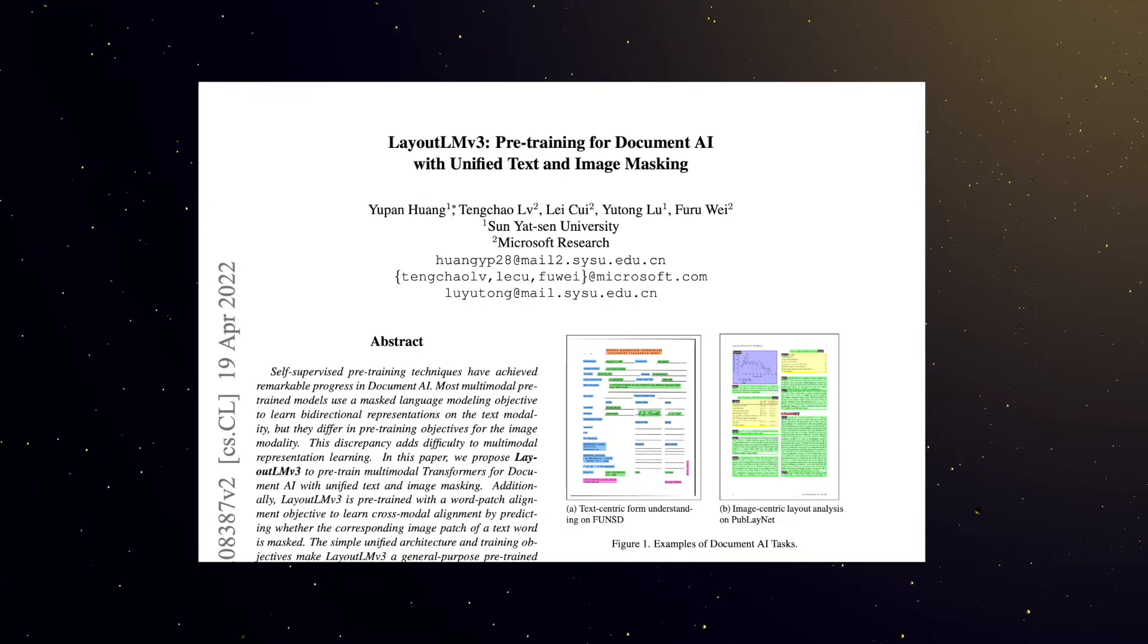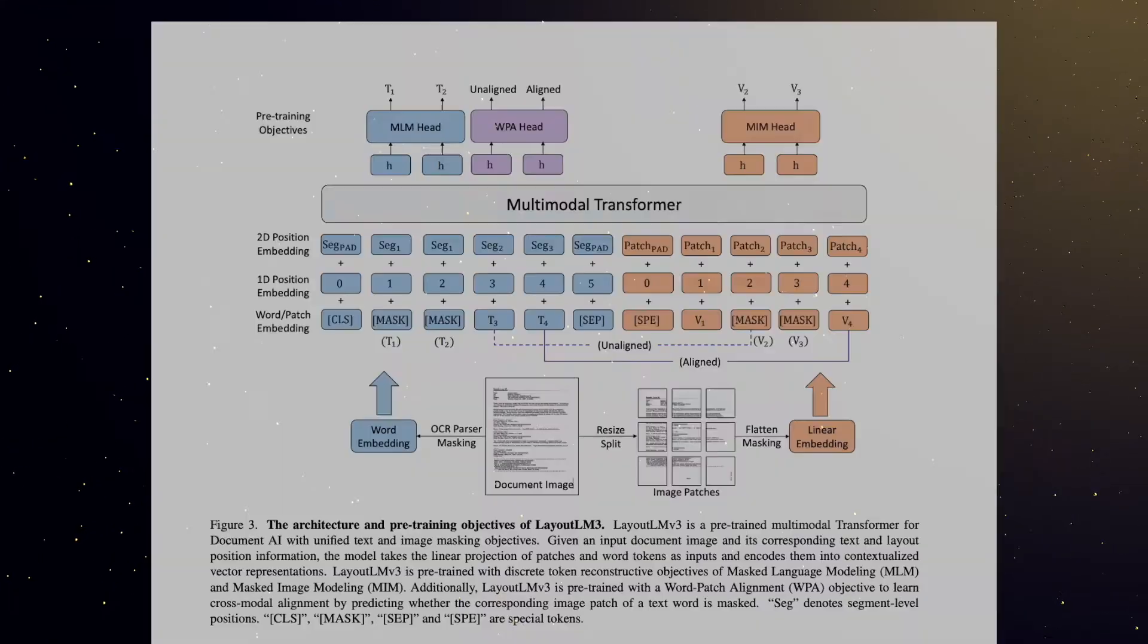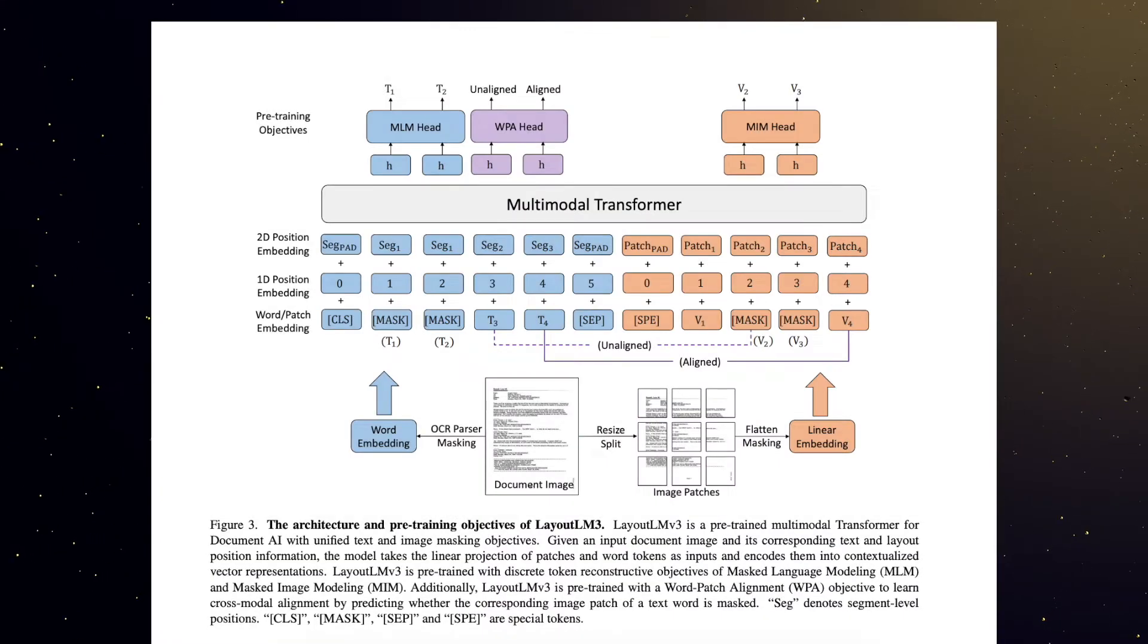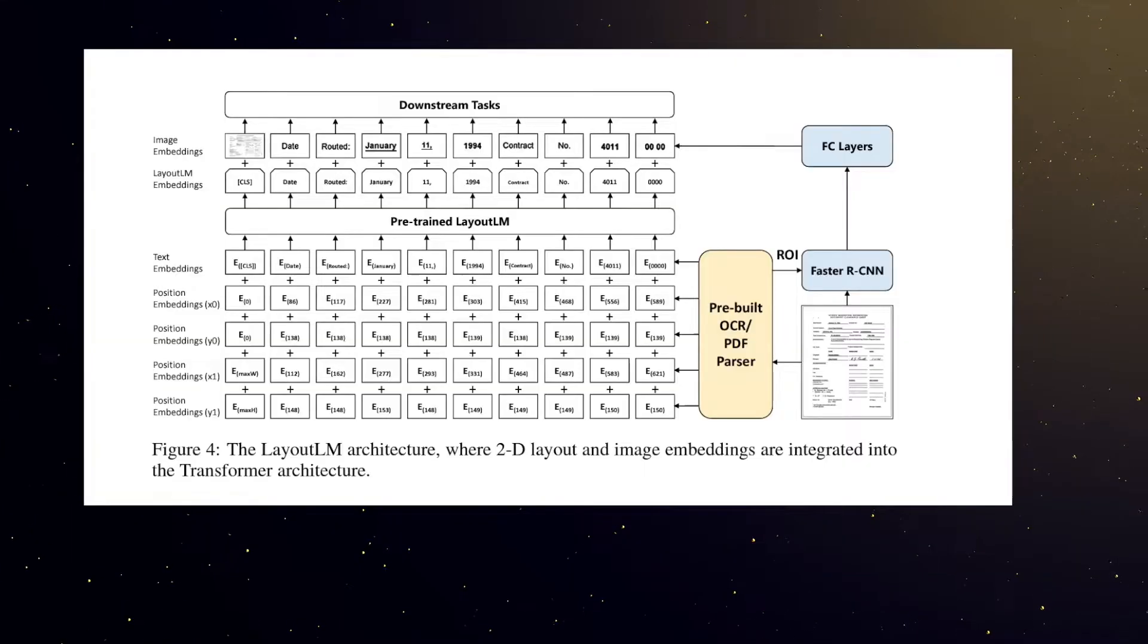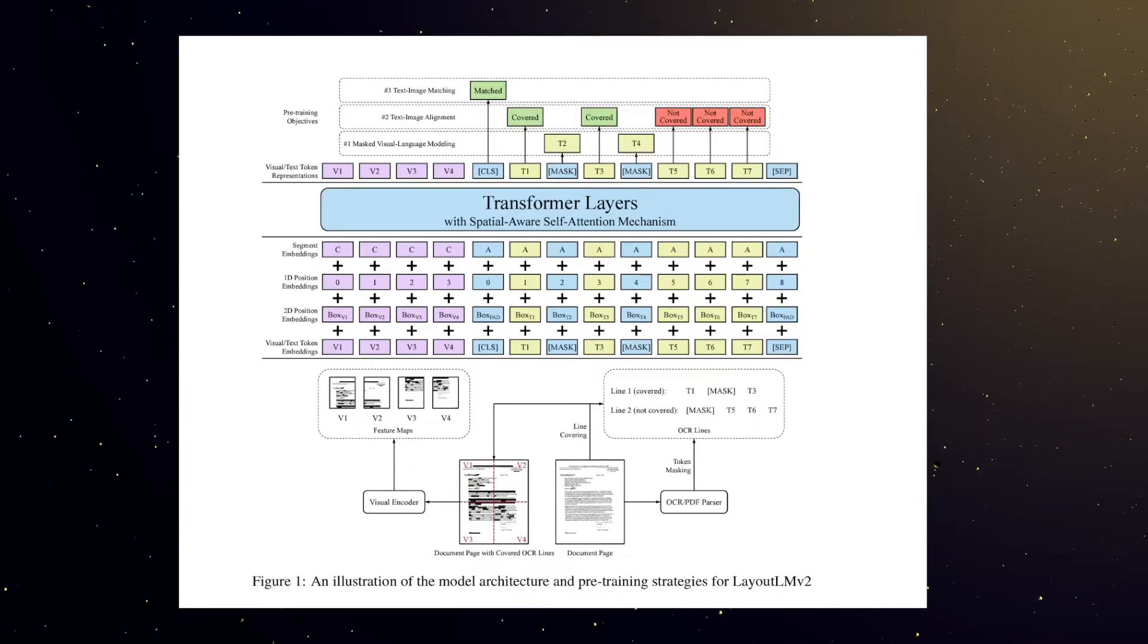Now what is LayoutLMV3? It's essentially a multimodal transformer that can process images and text and extract information from documents. According to the author, this is similar to the earlier versions. Now I am not familiar with the earlier versions so I cannot really comment too much about it.